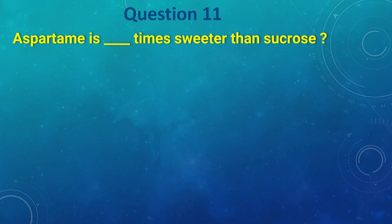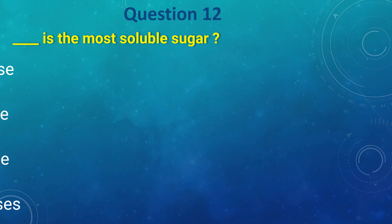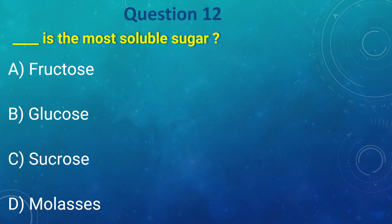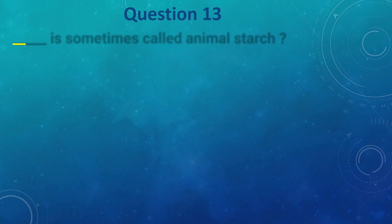_____ is the most soluble sugar: a) fructose, b) glucose, c) sucrose, d) molasses. The answer is fructose. _____ is sometimes called animal starch: a) amylose, b) amylopectin, c) glycogen, d) saponin. The answer is c) glycogen.